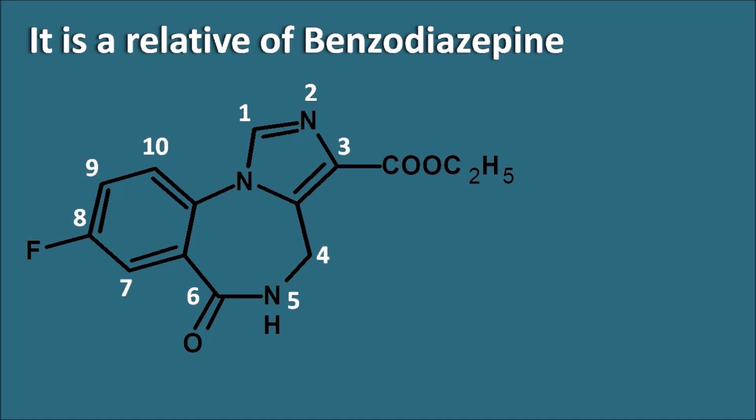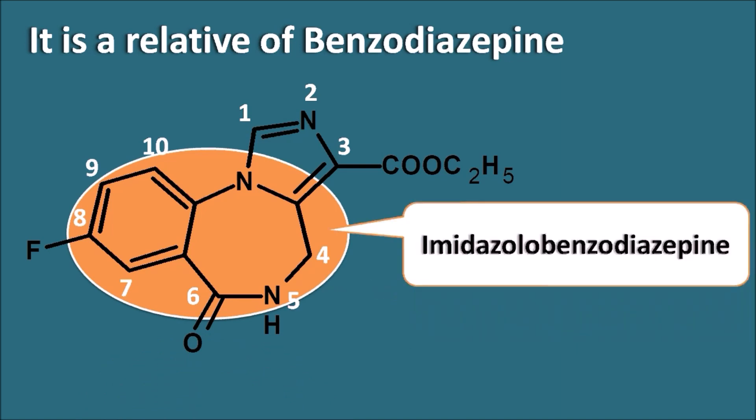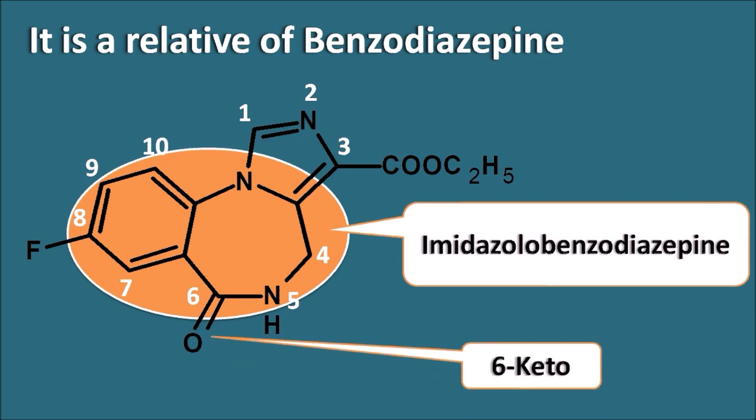The structure is somewhat similar to the benzodiazepine and we can observe that the 1,4-benzodiazepine is fused with the imidazole ring. So it is having the imidazole benzodiazepine nucleus. It is also having the eighth position electron withdrawing group like fluorine. But one important difference with the benzodiazepines is that benzodiazepines have a sixth position phenyl group, but here it has a sixth keto group.